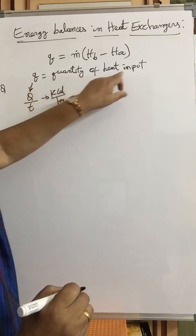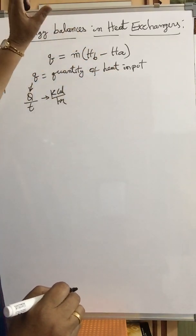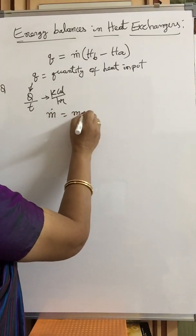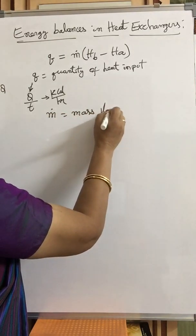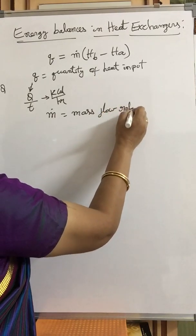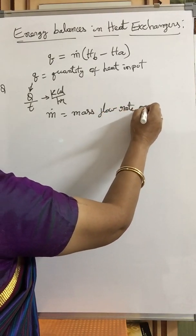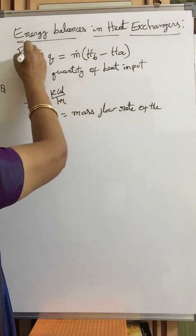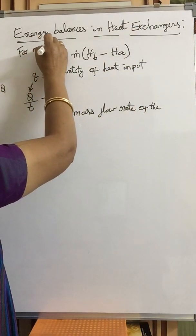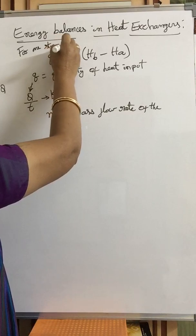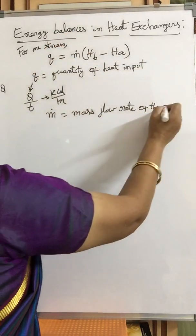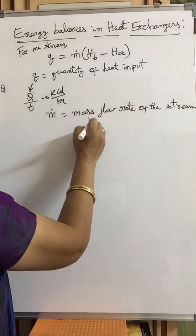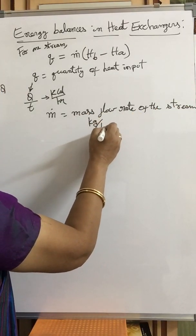Q is the quantity of heat input to the heat exchanger. And Ṁ is the mass flow rate of the stream. For one given stream we can write Q equal to Ṁ into HB minus HA. The unit of mass flow rate is, for example, kg per hour.